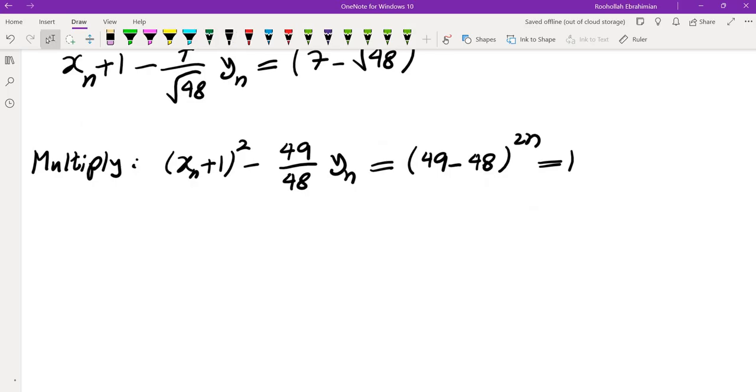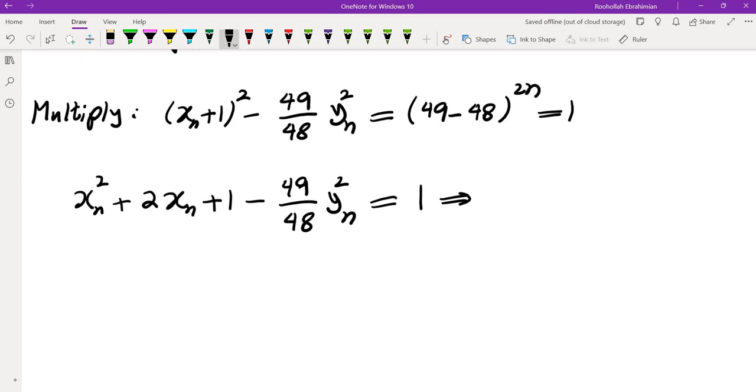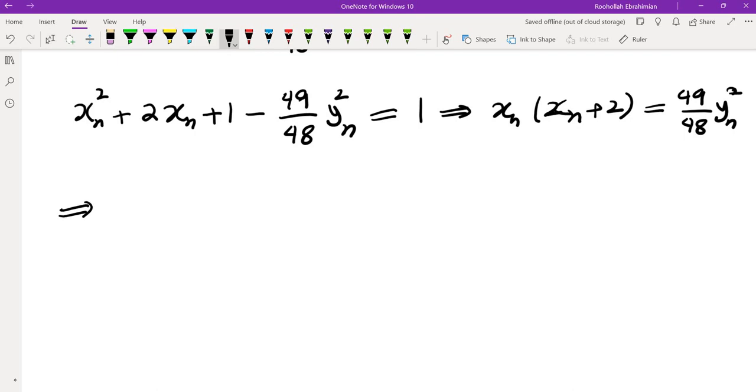Let's expand this. We get xn squared plus 2xn plus 1 minus 49 over 48 yn squared equals 1. This gives us xn times xn plus 2 equals 49 over 48 yn squared. Now let's clear the denominator. We get 48xn times xn plus 2 equals 49 yn squared.